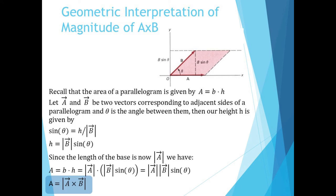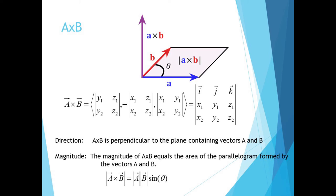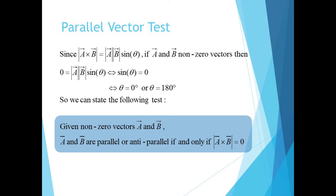So to summarize, a cross b creates a new vector which is perpendicular to the plane containing a and b and has a magnitude equal to the area of the parallelogram with sides a and b. The magnitude of a cross b is also used as a test for parallel vectors: assuming a and b are not zero vectors, the magnitude of a cross b equals zero if and only if sine of theta equals zero, which implies that theta is zero or 180 degrees, so the vectors are parallel or antiparallel. This makes sense from our area model — the only way our parallelogram will collapse and have an area of zero is if the vectors a and b are parallel. So checking if the magnitude of a cross b is zero is a quick test to see if two 3D vectors are parallel.